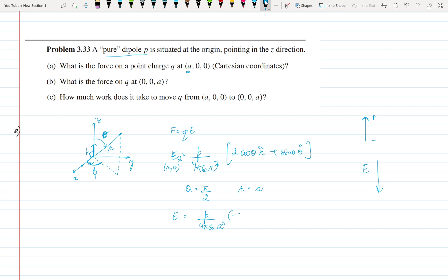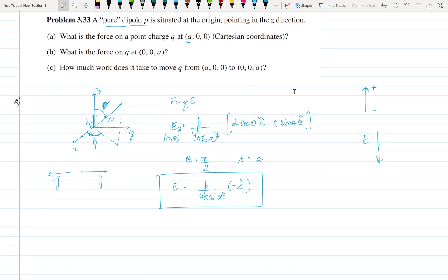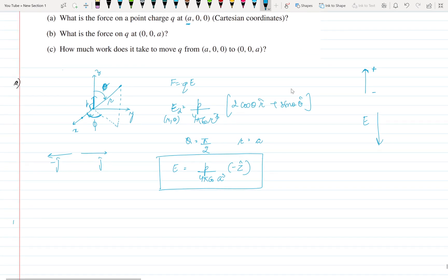So the direction of electric field will be opposite to that of dipole, so it will be minus Z cap. So the direction is important here. Suppose we have a dipole pointing towards minus J cap, then the direction of electric field would be plus J cap.